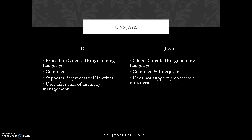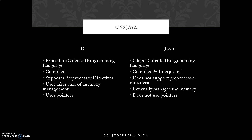In C, the user must manage memory manually — allocating memory using malloc and deallocating using free. In Java, memory management is handled internally through automatic garbage collection. C uses pointers, whereas Java does not support pointers. C is platform dependent — code developed on one platform runs only on that platform. Java is platform independent, following the 'Write Once, Run Anywhere' principle — code written once can be executed on multiple operating systems.